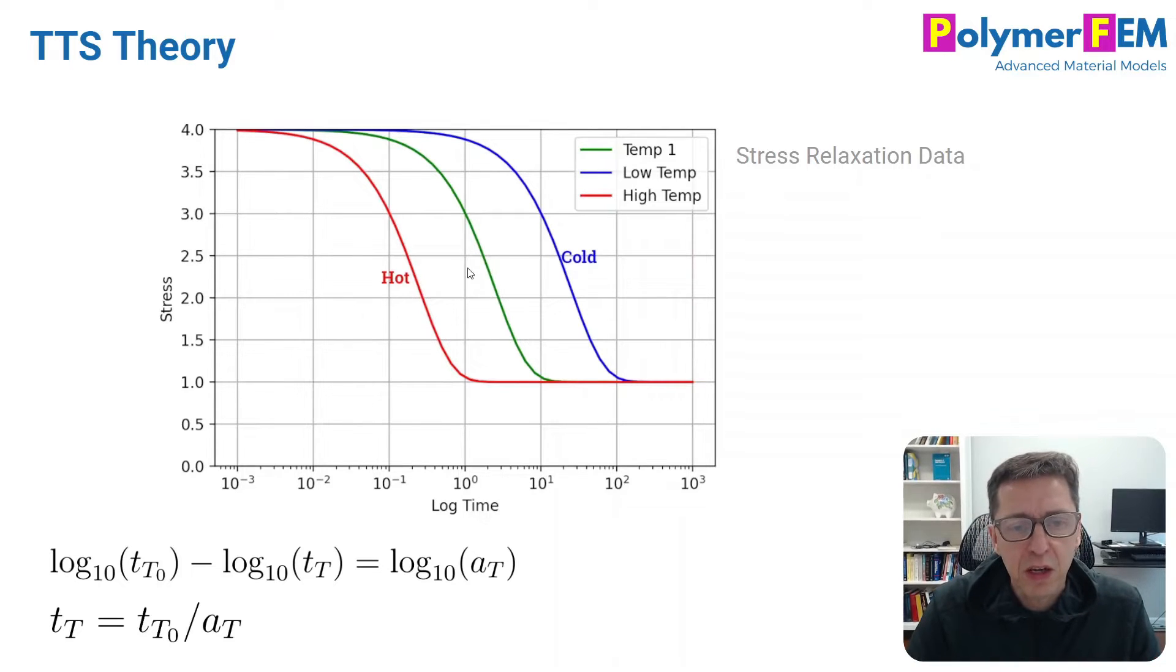So today I'm going to talk about equations that describe how you shift these curves. And the shift factor is called the aT parameter, and it's usually written as shown at the bottom here.